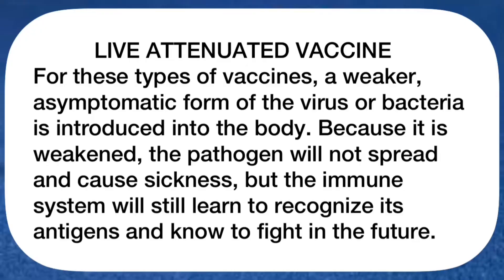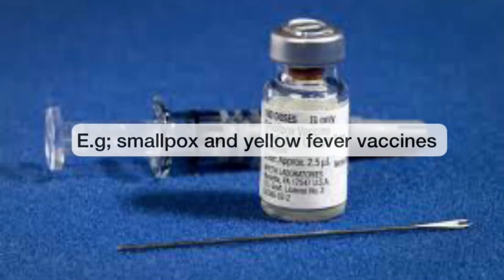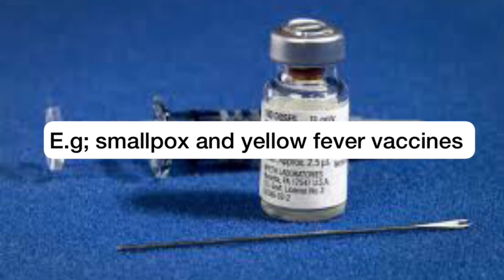If the bacteria or virus reappears, the immune system will recognize the antigens immediately and attack aggressively, well before the pathogen can spread and cause sickness. The first type of vaccine we are going to be talking about is the live attenuated vaccine, which is a vaccine in which a weaker, asymptomatic form of the virus or bacteria is introduced into the body. Because it is weakened, the pathogen will not spread and cause sickness, but the immune system will still learn to recognize its antigens and know to fight in the future. Examples of live attenuated vaccines are the smallpox and yellow fever vaccines.